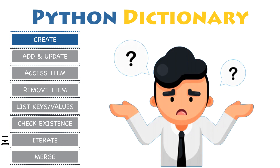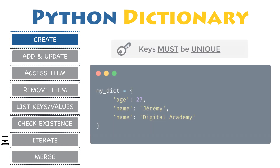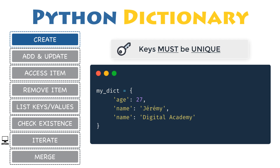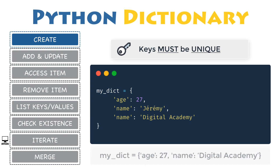Dictionaries are pretty straightforward, but here are a few points you should be aware of when using them. Keys must be unique — a key can appear in a dictionary only once. Even if you specify a key more than once during the creation of a dictionary, the last value for that key becomes the associated value. Notice that the first occurrence of the key 'name' has been replaced by the second one, 'Digital Academy'.